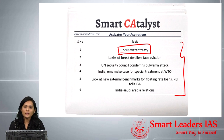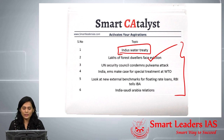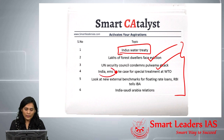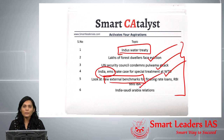The second article talks about the recent Supreme Court judgment with respect to the Forest Rights Act, due to which lakhs of forest dwellers face eviction. The third article talks about the United Nations Security Council and its recent statement on the Pulwama attack. The fourth article talks about India and emerging markets making a case for special treatment in the World Trade Organization. The fifth article is about the new external benchmark rates for floating loans according to RBI.